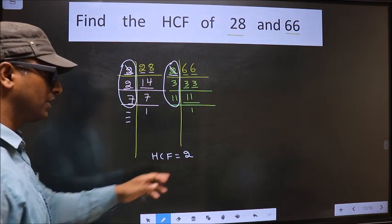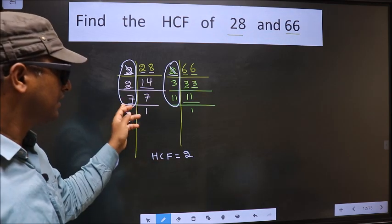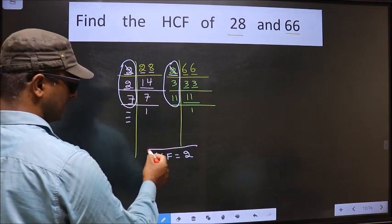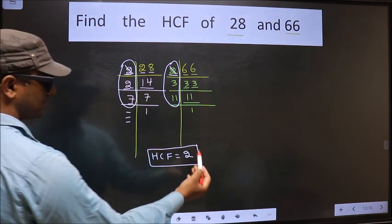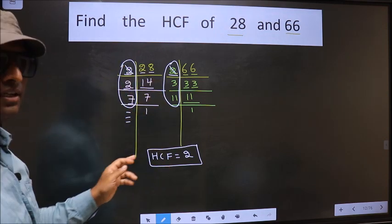We have only one number, 2, present in these two places. So this itself is our HCF. Am I clear?